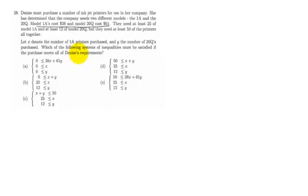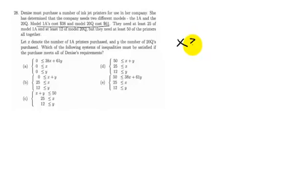Notice that the cost has nothing to do with the requirements — so that actually was not important. The requirements are that you need at least 25 of Model A. So X, which represents the number of 1A's, has to be at least 25. X is greater than or equal to 25.